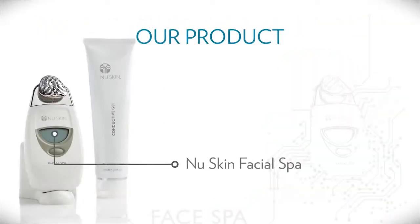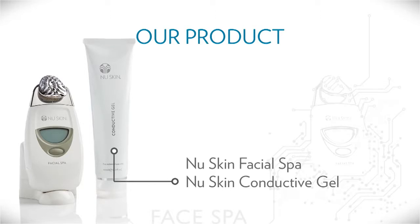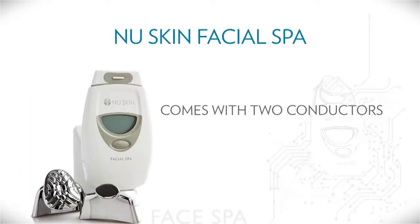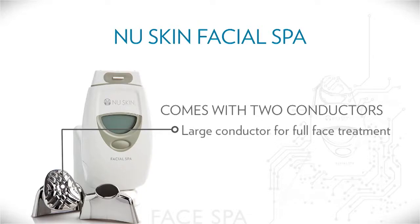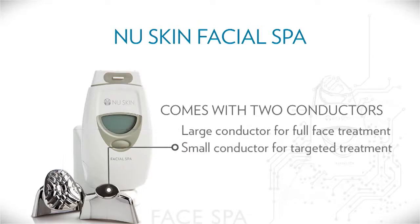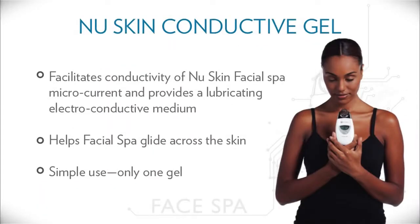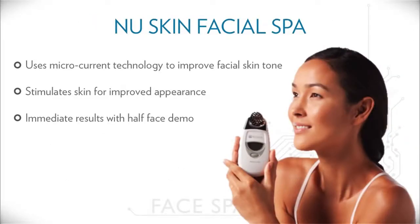Our product consists of two products: the Nu Skin Facial Spa and Nu Skin Conductive Gel. The Nu Skin Facial Spa comes with two conductors — a large conductor for full-face treatment and a small conductor for targeted area treatment. The Nu Skin Conductive Gel facilitates conductivity of Nu Skin Facial Spa microcurrent and provides a lubricating electroconductive medium. This helps the Facial Spa glide across the skin, and it's very simple to use — just one gel. The Nu Skin Facial Spa uses microcurrent technology to improve facial skin tone, stimulate skin for improved appearance, and you can demonstrate these benefits in a half-face demo.